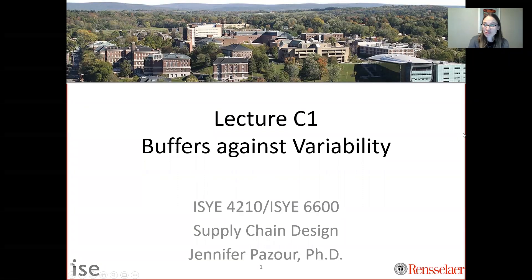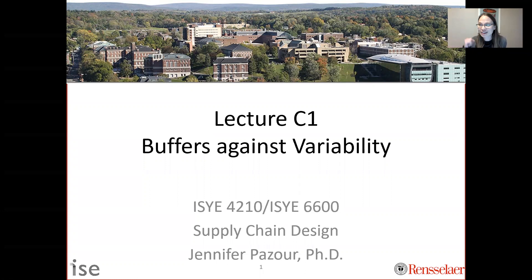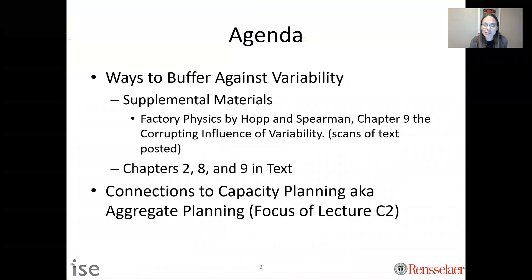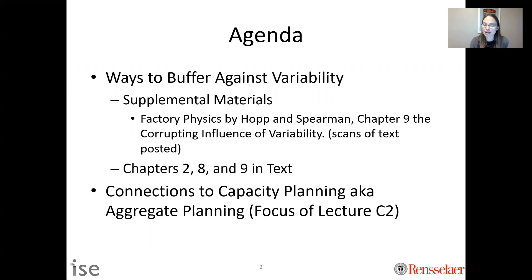In this video, we're going to talk about buffering against variability. Variability is the villain we're going to learn about in this class. One reason it's the villain is that in operations or supply chains, if we have variability, we need buffers to make sure we meet demand. In terms of the agenda for today, this is one of many in our new module. We're going to start introducing ways to buffer against variability, from factory physics, as well as making a connection to capacity planning or aggregate planning, which will be the follow-on video.